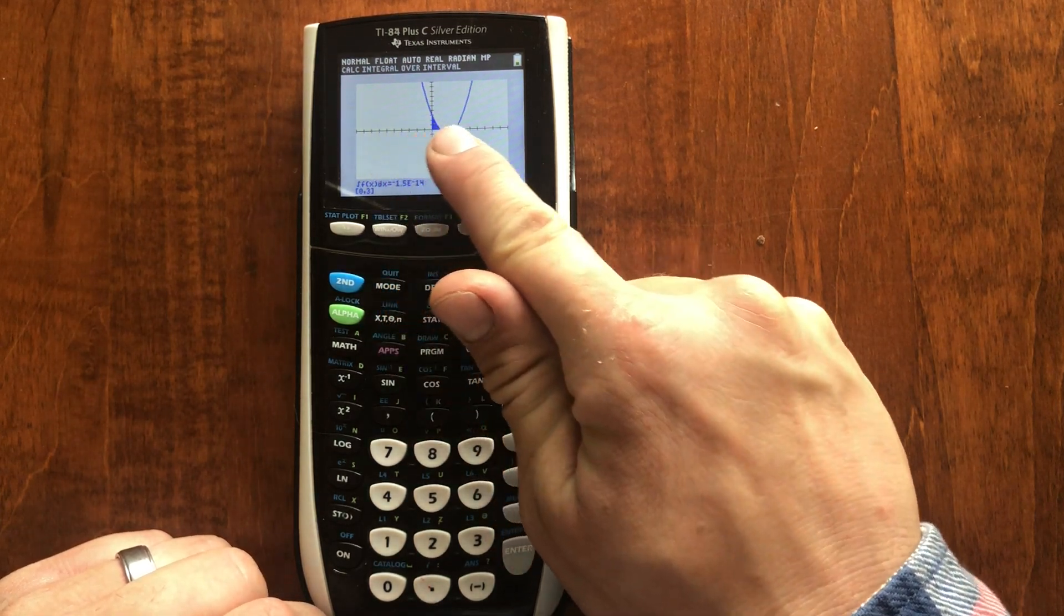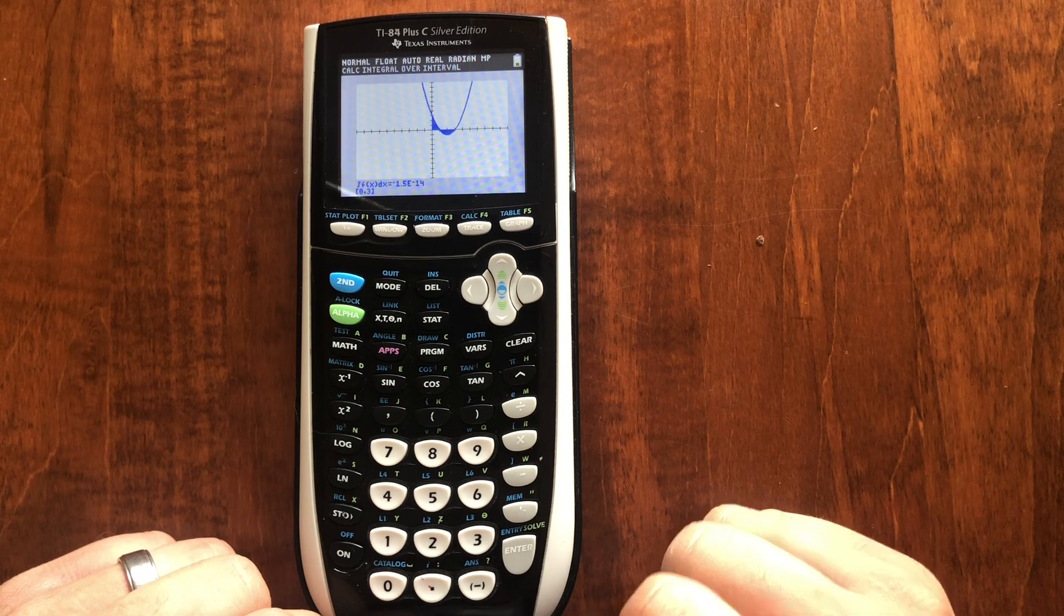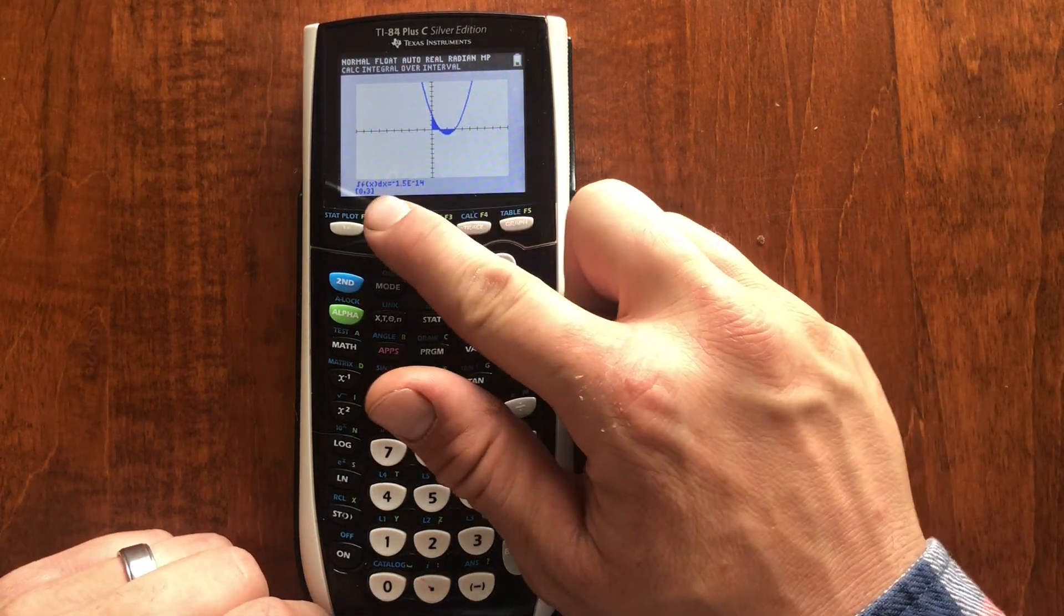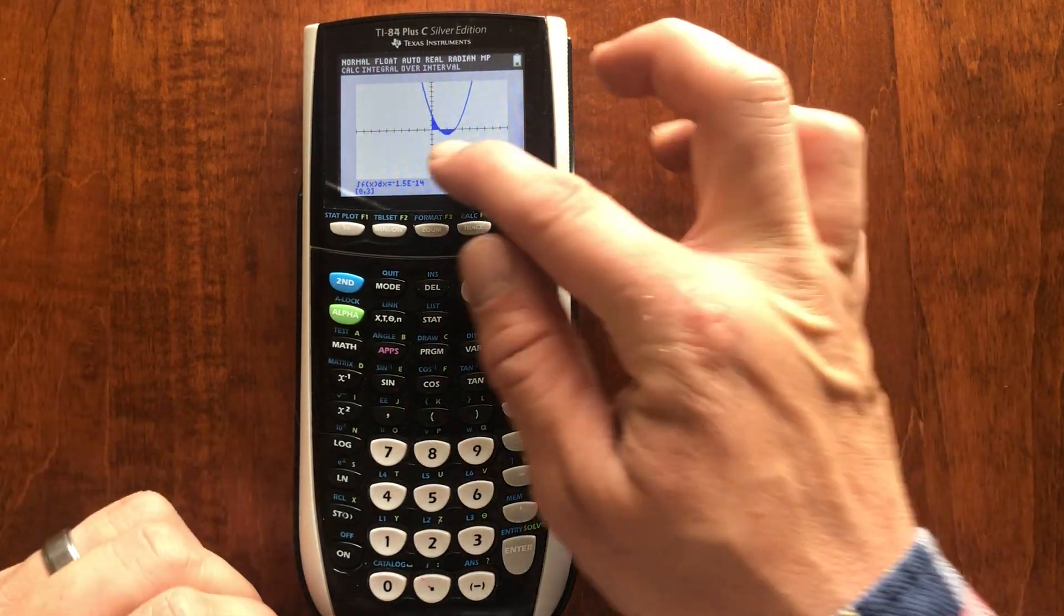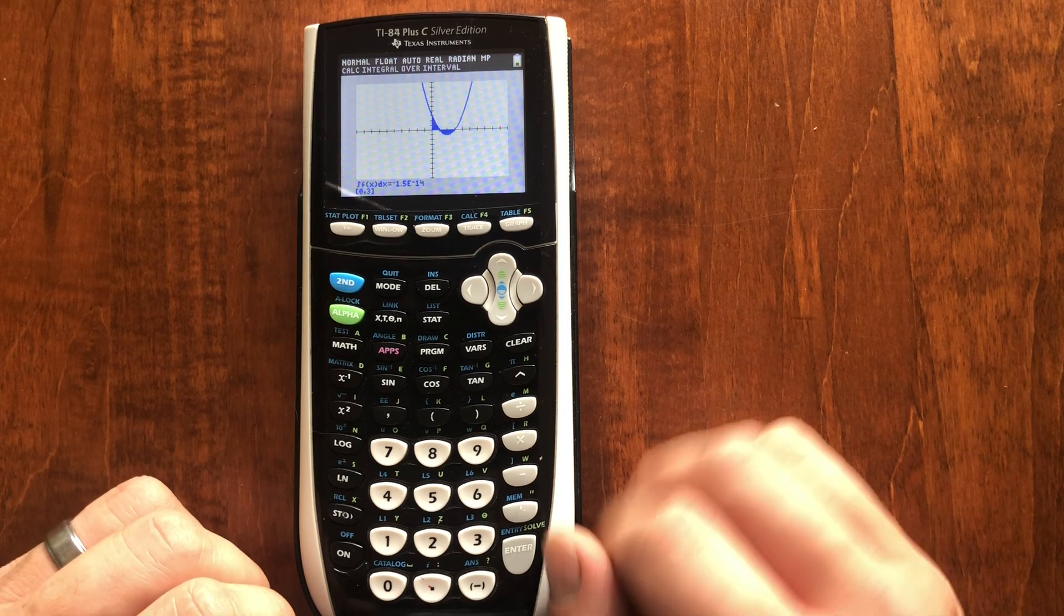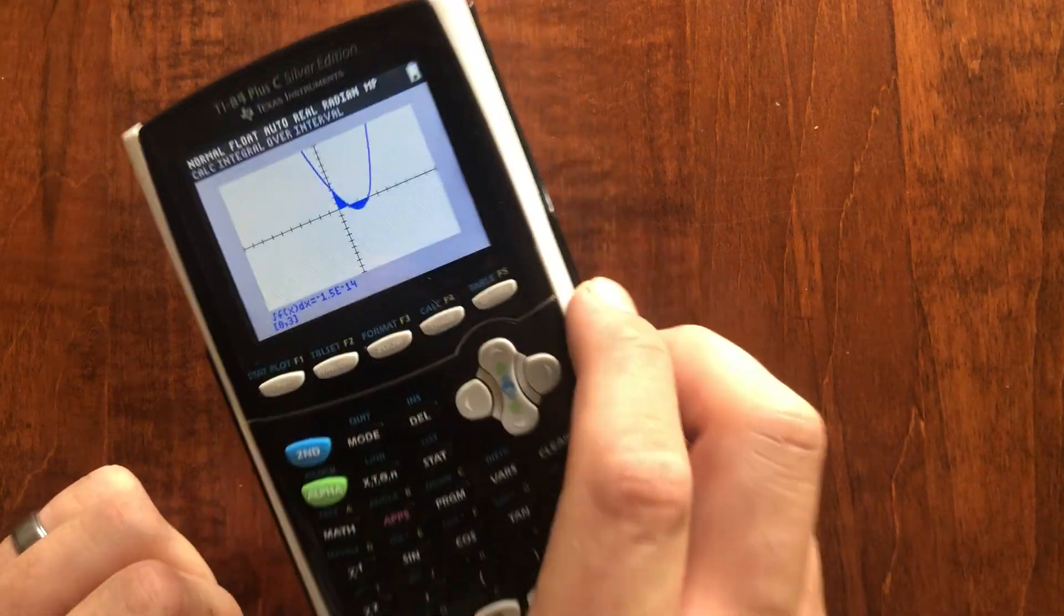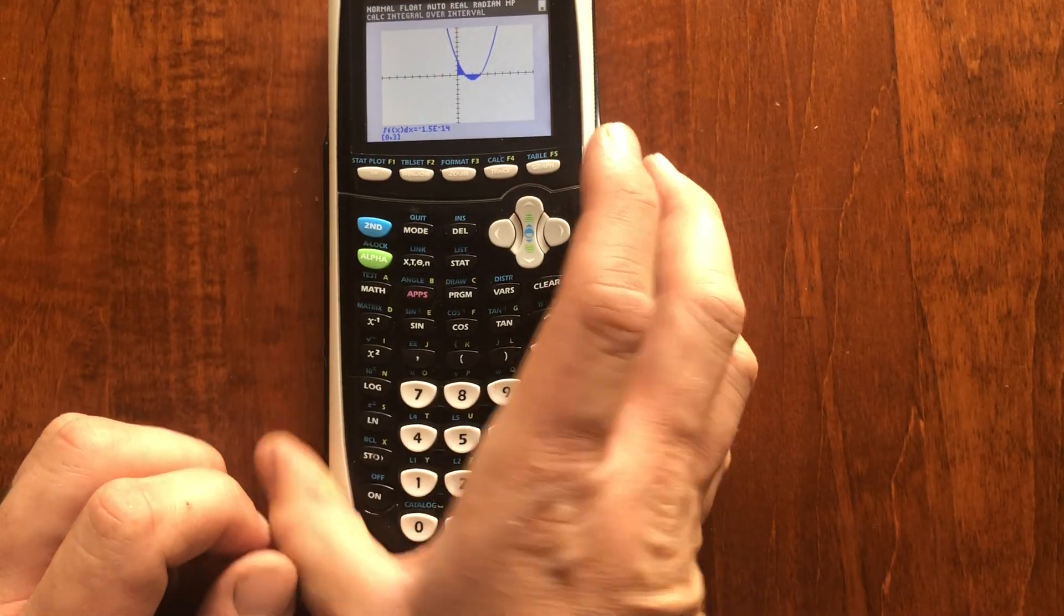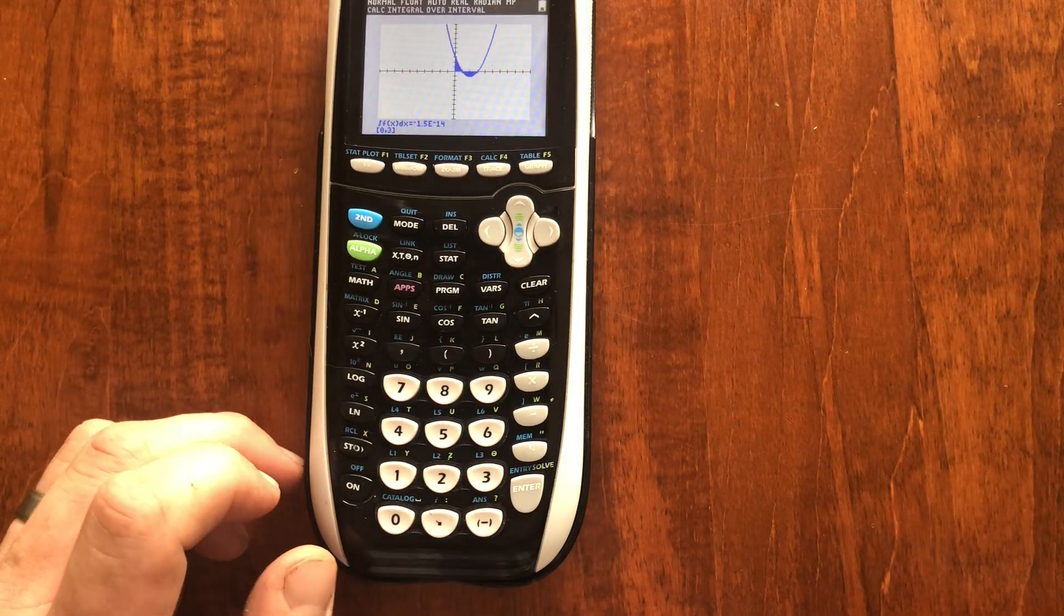Well, anything underneath the x-axis is given a negative sign. So it's a negative area. This statement just means that the integral from zero to three is zero, meaning that area above and that area below are about equal. Do they look equal to you? So that's a way to integrate graphically.